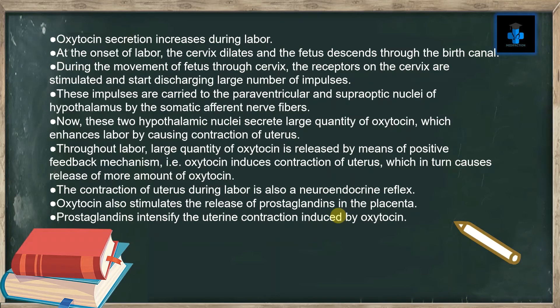These two hypothalamic nuclei secrete large quantities of oxytocin, which enhances labor by causing contraction of the uterus. Throughout labor, large quantities of oxytocin are released by positive feedback mechanism — that is, oxytocin induces contraction of the uterus, which in turn causes release of more oxytocin. The contraction of the uterus during labor is also a neuroendocrine reflex.